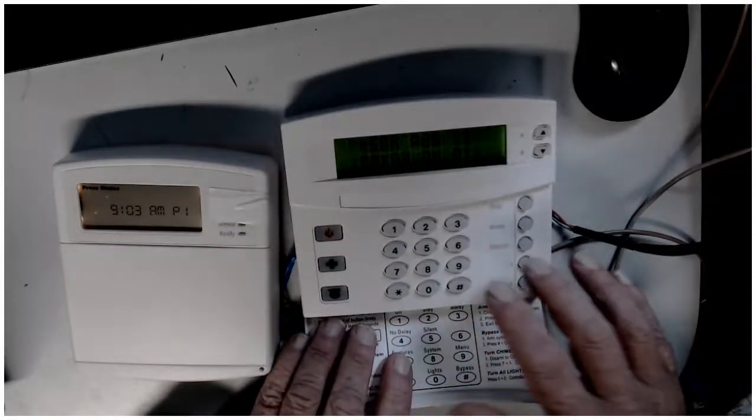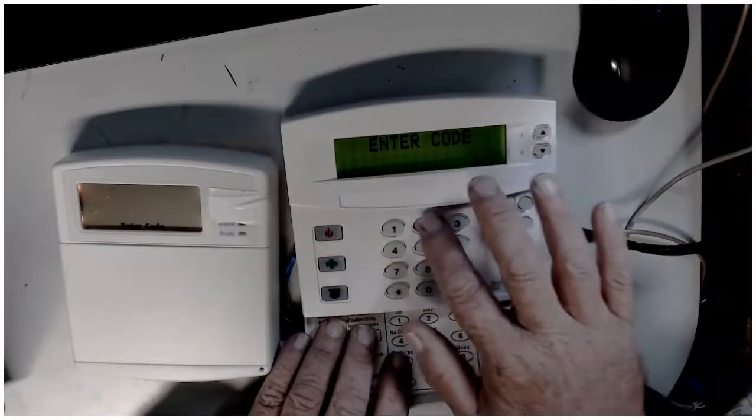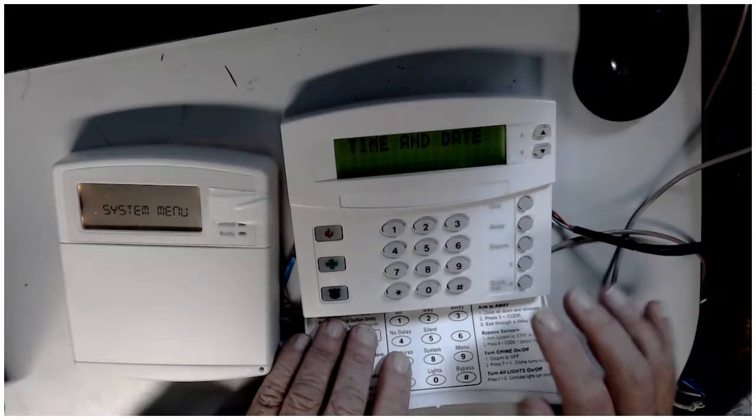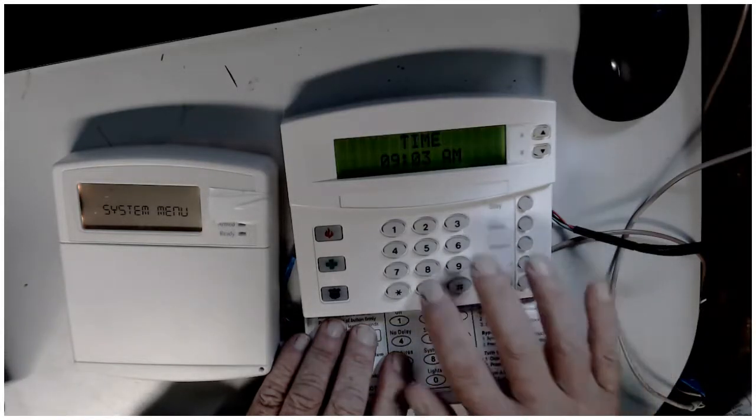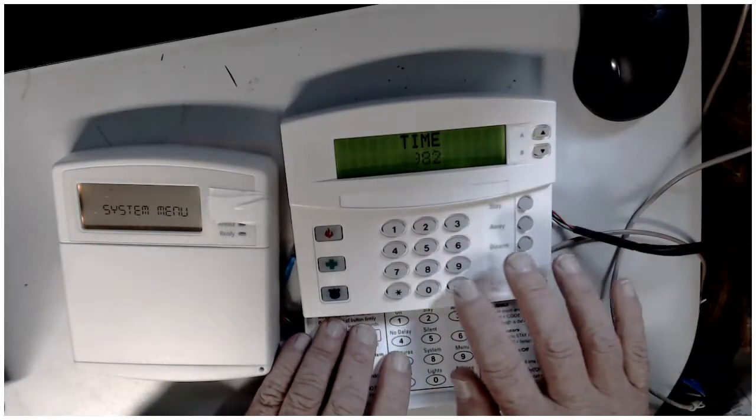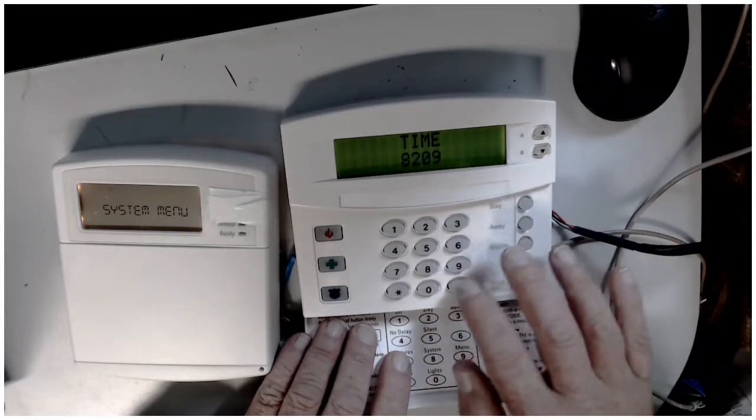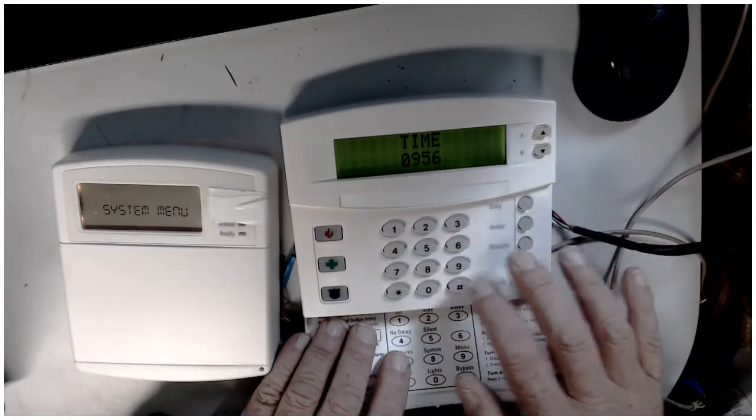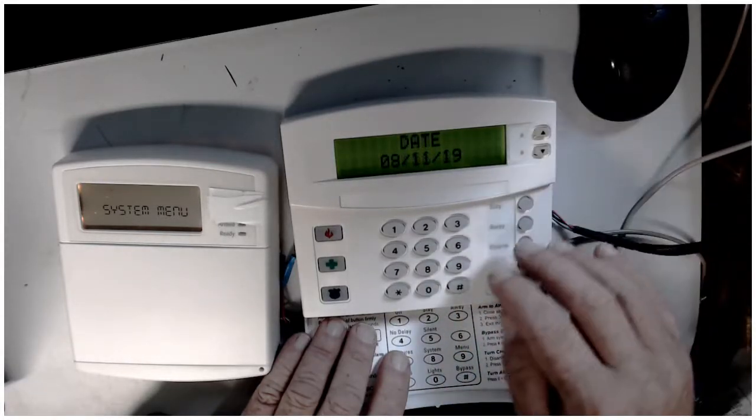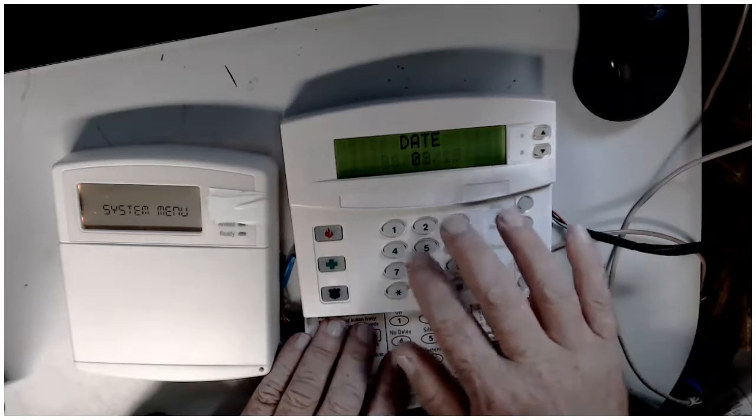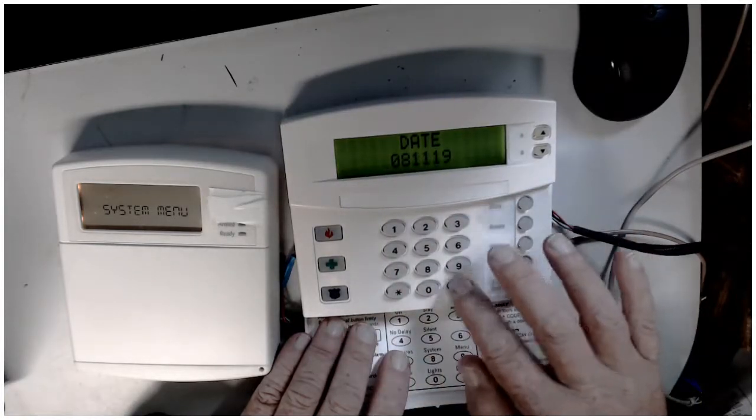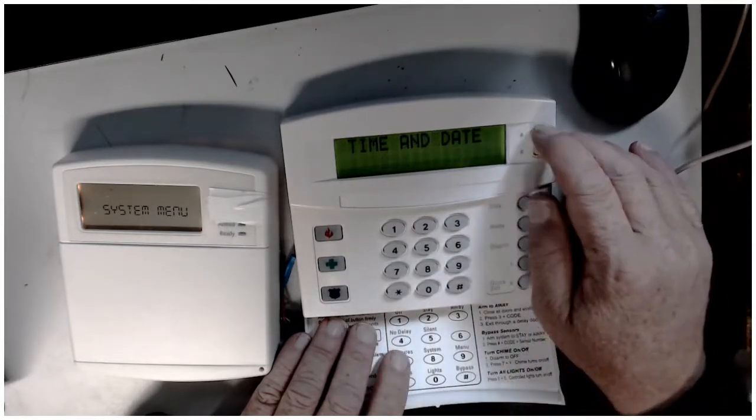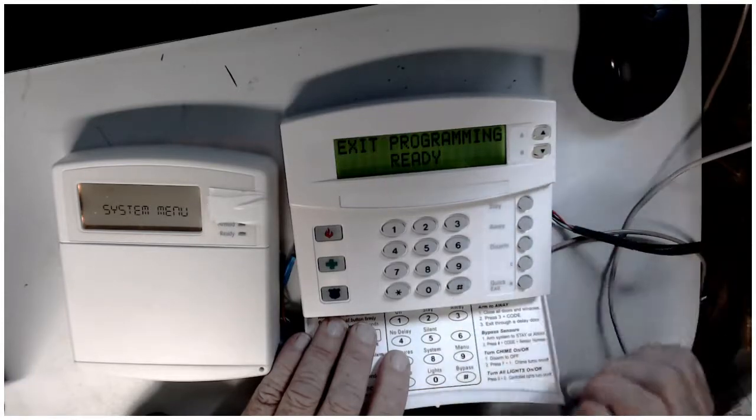So let's go in and set the time and date. So nine, your user code. And time and date. You hit pound. Let's just put in anything. Zero, nine, 56. Hit the pound. Let's go up to the date. Zero, eight, one, one, one, nine. And let's just get out of here. Exit program.